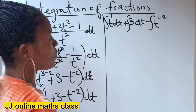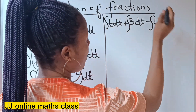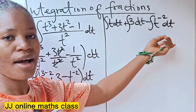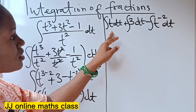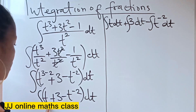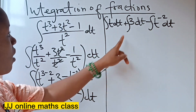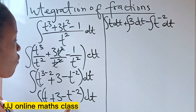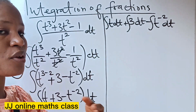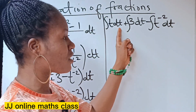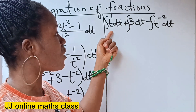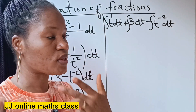Minus integral of t to the power of minus 2, dt. This is what we are going to integrate now. What I did is separate these terms: integral of t dt, integral of 3 dt, and integral of t to the power of minus 2 dt. This dt is just telling us that we are integrating with respect to t — it's not that we integrate dt itself.